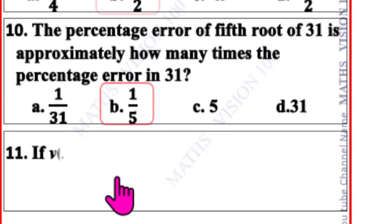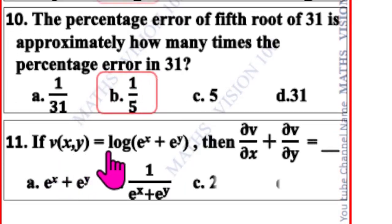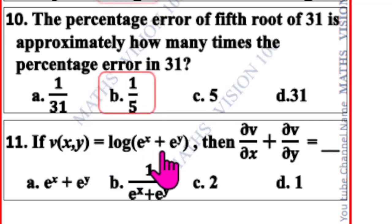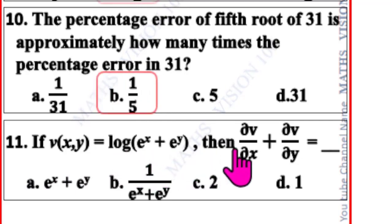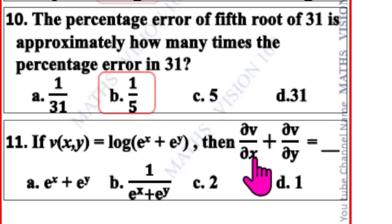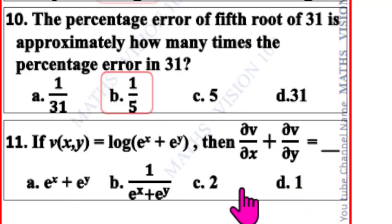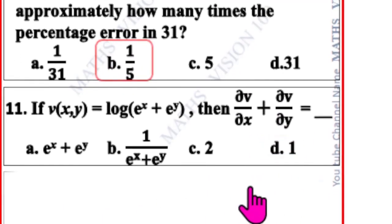Question number 11. If v(x, y) = log(e^x + e^y), then ∂v/∂x + ∂v/∂y is equal to — the correct option is D: 1.